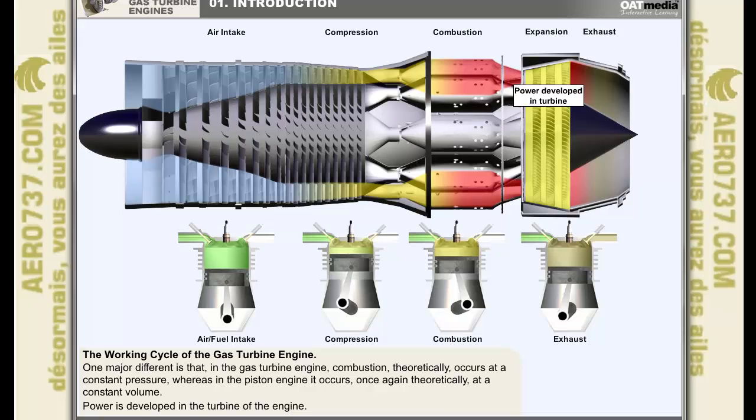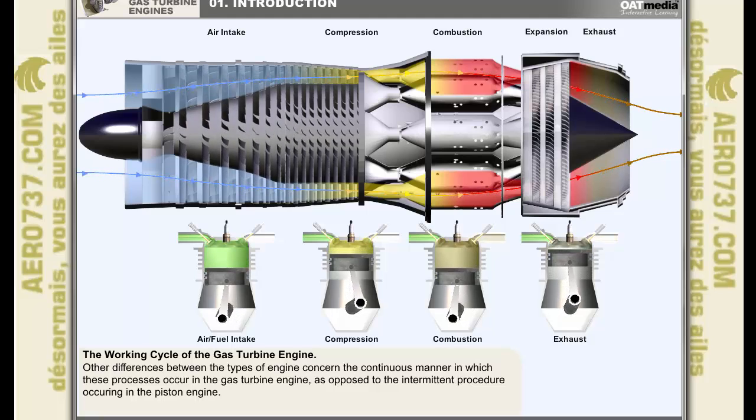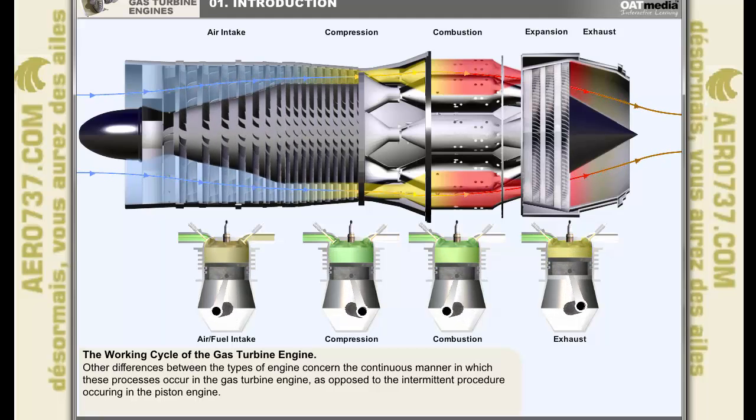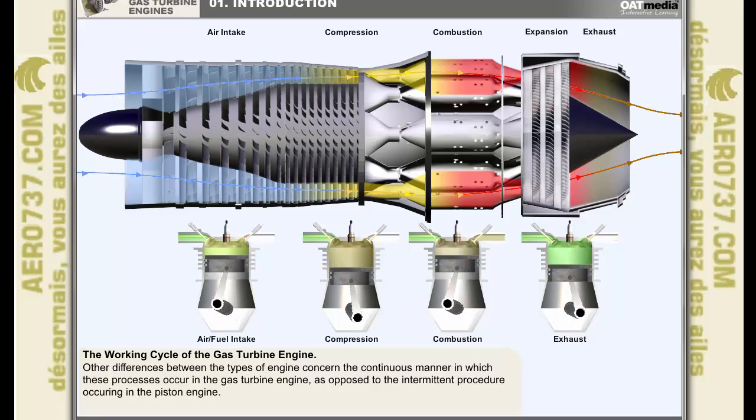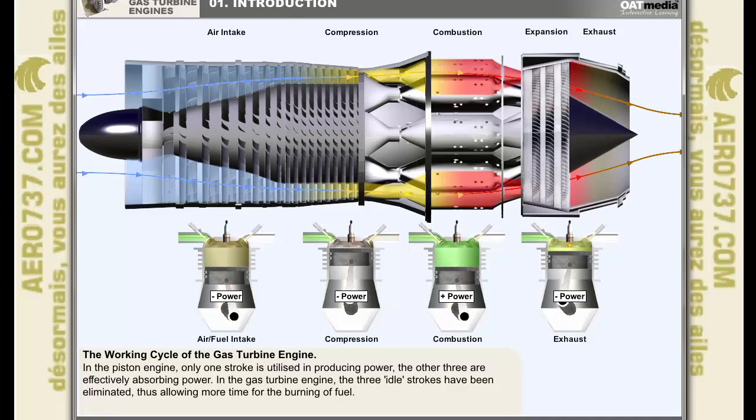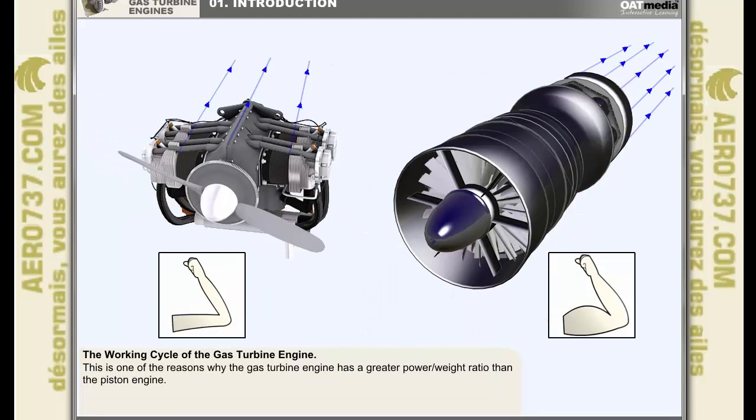Power is developed in the turbine of the engine. Other differences between the piston engine and the gas turbine engine concern the continuous manner in which these processes occur in the gas turbine engine, as opposed to the intermittent procedure occurring in the piston engine. In the piston engine, only one of the strokes is utilized in producing power. The other three are effectively absorbing power, while in the gas turbine engine, the three idle strokes have been eliminated, thus allowing more time for the burning of fuel. This is just one of the reasons why the gas turbine engine has a greater power-weight ratio than the piston engine.